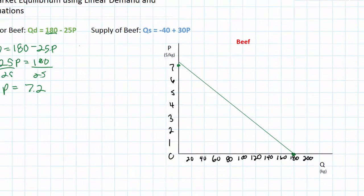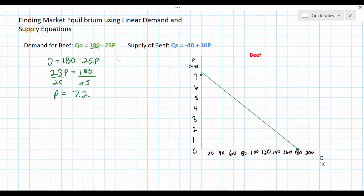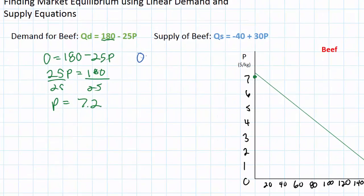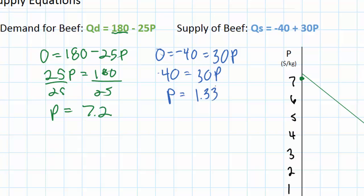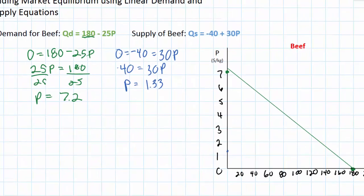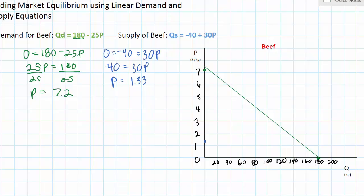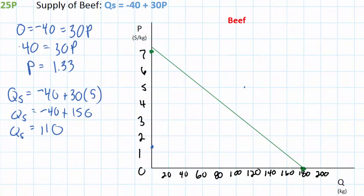Next let's draw the supply curve. To find the p-intercept of the supply curve I set quantity supplied to zero. The supply curve begins at a price of $1.33. To draw the supply curve I need a second point along the curve, so I plug in a price of $5 to determine what quantity would be supplied. At a price of $5, 110 kg of beef will be supplied. With these two points along my supply curve I can go ahead and plot it.